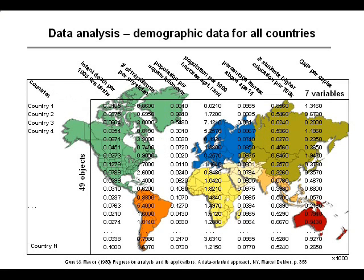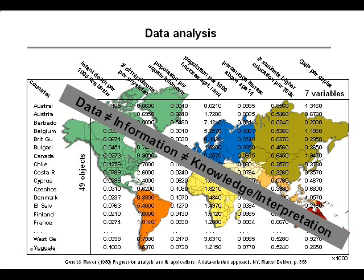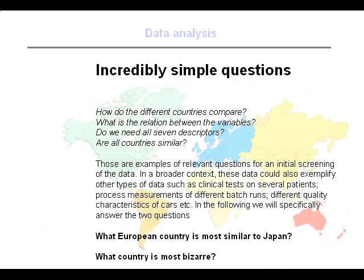Here's an example of what is actually a quite simple data set. We have 49 different countries, and seven demographic descriptors — such as the number of infant deaths per 1,000 births, number of inhabitants per physician, etc. So this is a fairly small data set, but even that can be complicated to look into. Data in itself is not the same as information and understanding. When we have a data set like this, we want to figure out how all the different variables and samples compare to each other — how do different countries differ, what variables are related to each other, what samples are related to what variables.